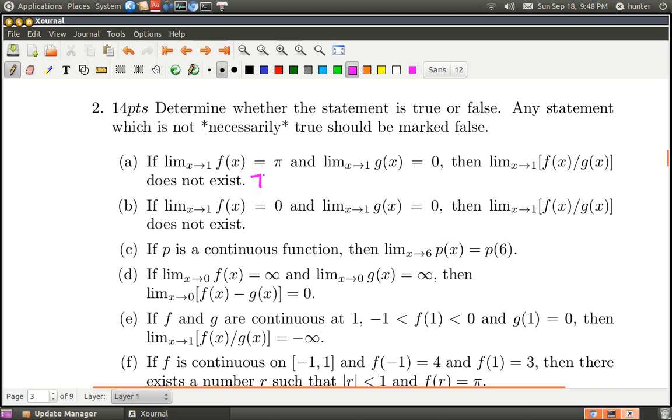This is true. The reason is that as x gets closer to 1, the numerator approaches pi while the denominator approaches 0. So we have pi over something very small. When you take the reciprocal of something very small, you get something very big.